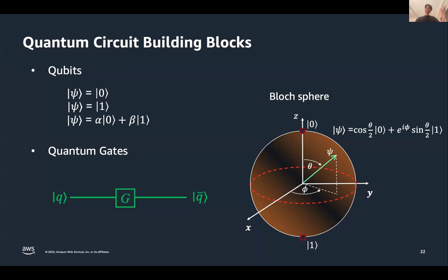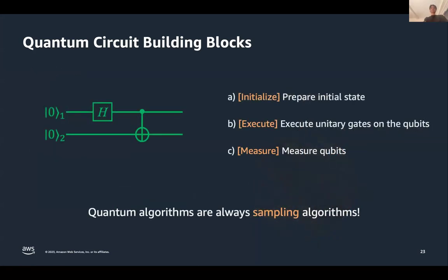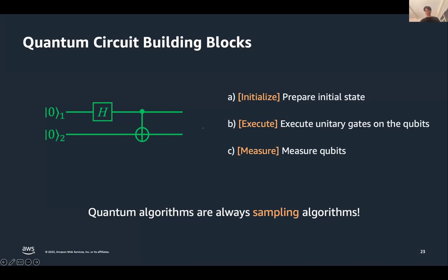Now we know what a qubit is and what a quantum gate is. To build a quantum circuit: initialize a register of qubits in the zero state — say n qubits or for example two qubits — then execute unitary gates on this circuit, and at the end make a measurement to see what the output is going to be. We'll discuss the meaning of H and the CNOT gate in a moment.